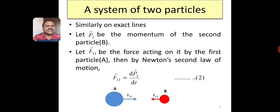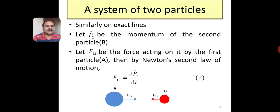Similarly, let p2 be the momentum of the second particle, that is particle B, and f12 be the force exerted on it by the first particle, which is particle A. Then, according to Newton's second law of motion, f12 is equal to dp2 divided by dt, where p2 is the momentum of the second particle and f12 is the force acting on the second particle. Let this be equation 2.